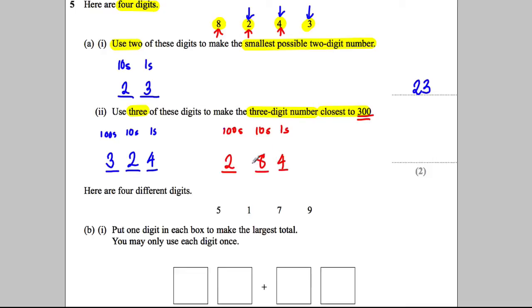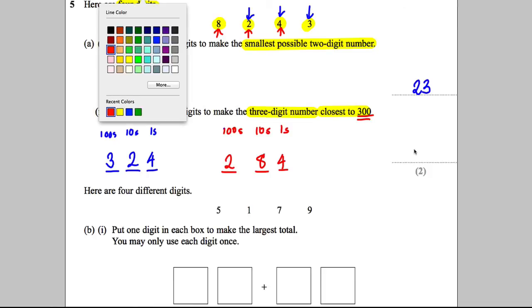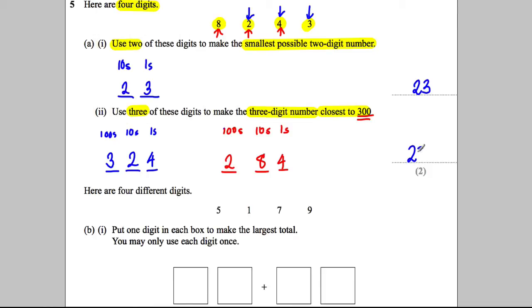This is 16 less than 300. So this one's actually closer. It's 16 away. So the answer here would be equal to 284.